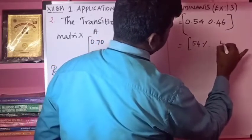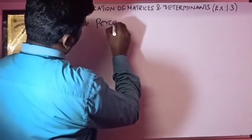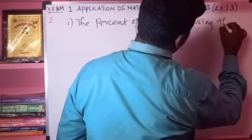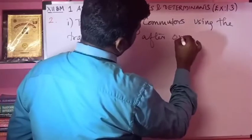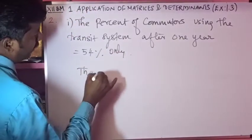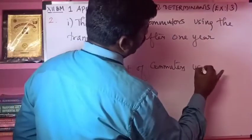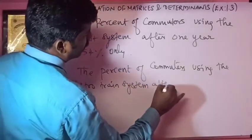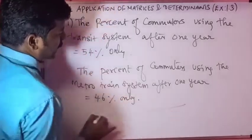The result is 0.54 and 0.46, which means 54 percent and 46 percent. Therefore, the percent of commuters using the transit system after one year is 54 percent, and the percent of commuters using the metro train system after one year is 46 percent.